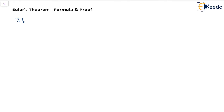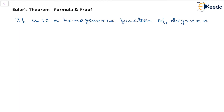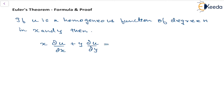Euler's theorem on homogeneous functions says that if u is a homogeneous function of degree n in the variables x and y, then we will have x times the partial derivative of u with respect to x, plus y times the partial derivative of u with respect to y, equal to n times the function u.